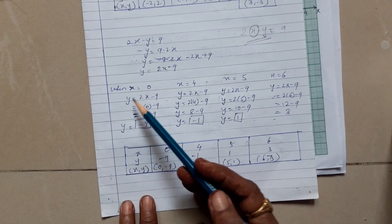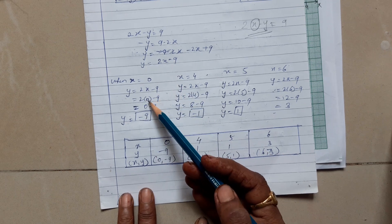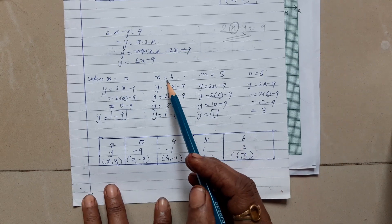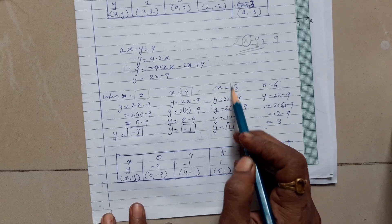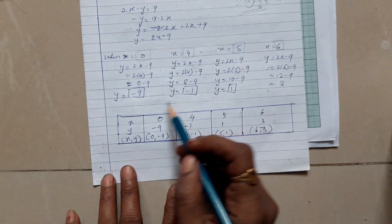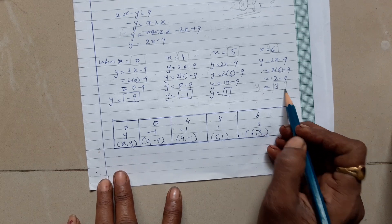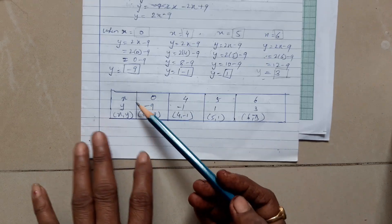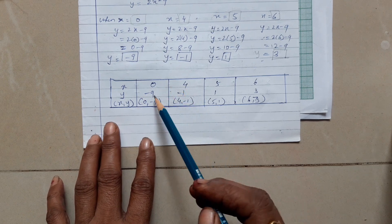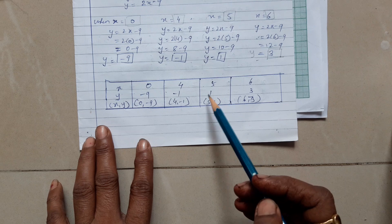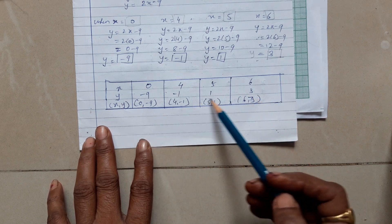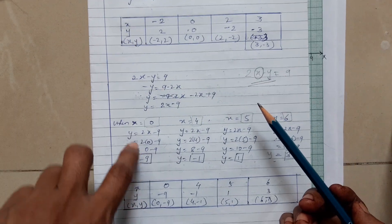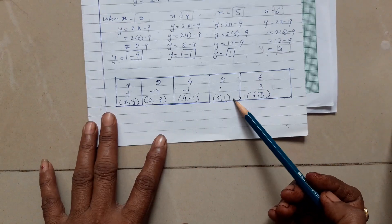When x = 0, substitute into y = 2x - 9: y = 2(0) - 9 = -9. For x = 4, y = -1. For x = 5, y = 1. For x = 6, y = 3. Make the table: x: 0, 4, 5, 6 and y: -9, -1, 1, 3. These are the coordinates for the second equation.